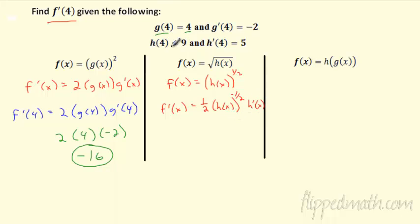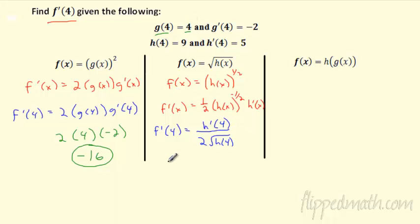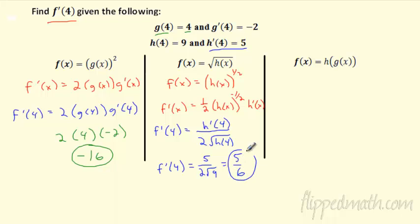Now can we go ahead and plug in 4? The negative exponent moves things to the bottom: 2 on the bottom, the square root of h(4) on the bottom, and h'(x) on top. Evaluating: h'(4) = 5 over 2 times √(h(4)) = √9 = 3. So that's 5 over 2 times 3, which is 5/6.